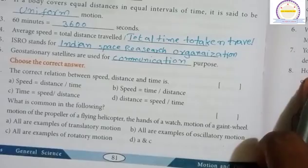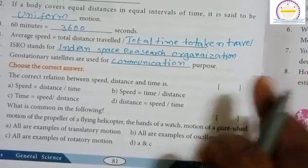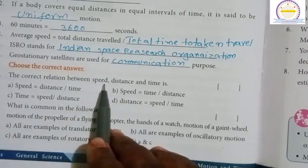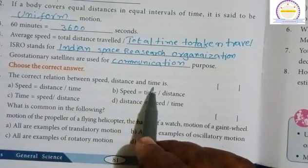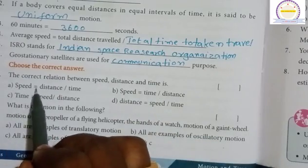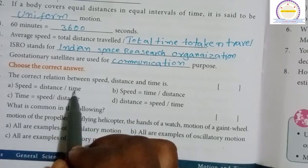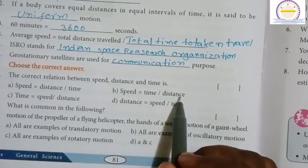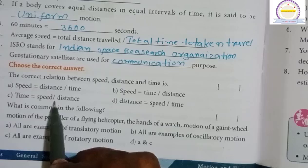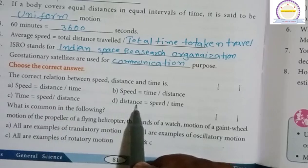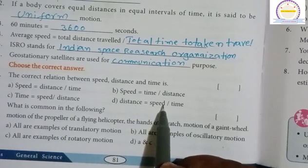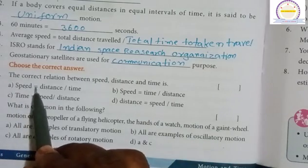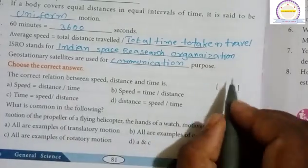Choose the correct answers. The correct relation between speed, distance, and time is: a) speed equals distance by time, b) speed equals time by distance, c) time equals speed by distance, d) distance equals speed by time. The answer is A: speed equals distance by time.